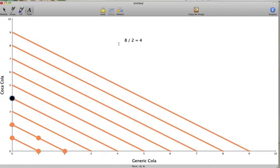Generic Cola costs $1. If I have $8 and I spend all of my money on Generic Cola, 8 divided by 1 equals 8, I can afford 8 Generic Colas.